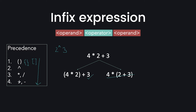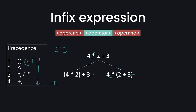Now we have to talk about associativity. Suppose I have one expression where the precedence is the same — for example, I have both plus and minus signs. So for that we have associativity: left to right. I will go left to right, so first I will compute 4 minus 2, and then add 3 to the answer. Similarly, multiplication and division also have left-to-right associativity.